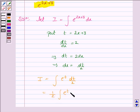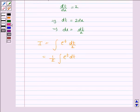And we know that the integral of e to the power t is e to the power t. So this is equal to 1 by 2 e to the power t plus c, where c is the constant of integration.